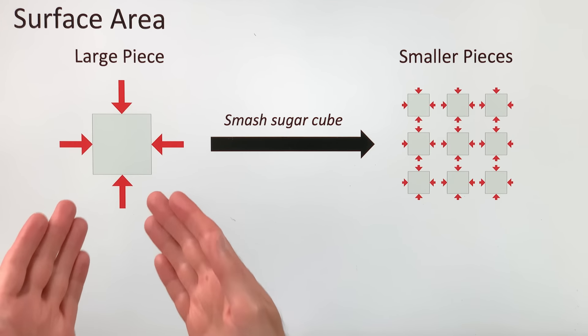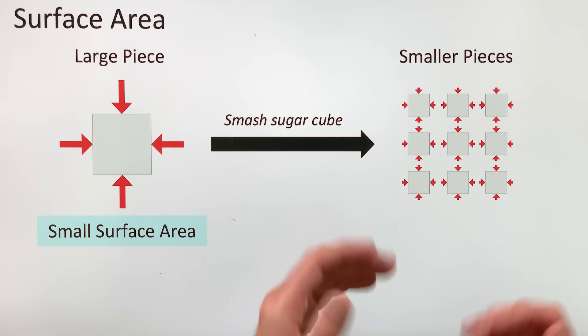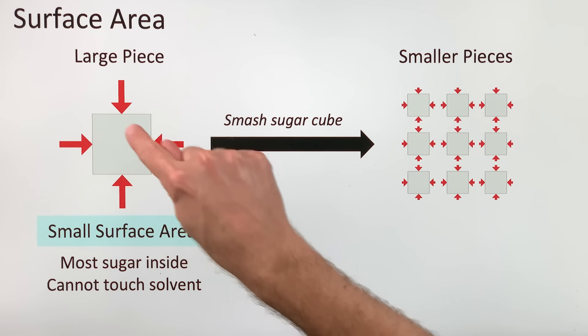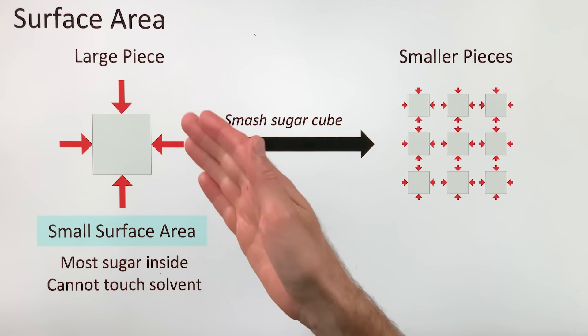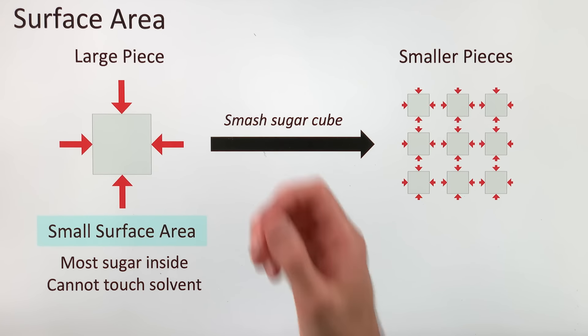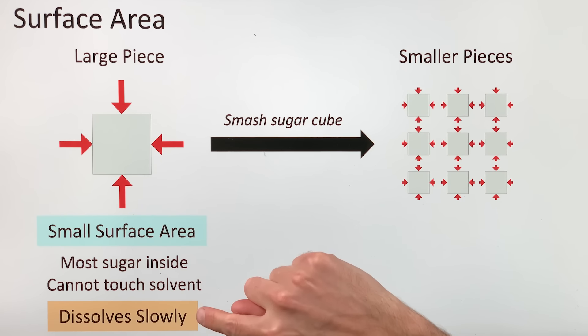Here's another 2D view of our sugar cube. Imagine you smash it up into smaller pieces. A sugar cube has a relatively small surface area. In a sugar cube, most of the sugar is hidden inside the cube. It can't touch the solvent and has to wait to be exposed before it can be dissolved. So the cube dissolves slowly.